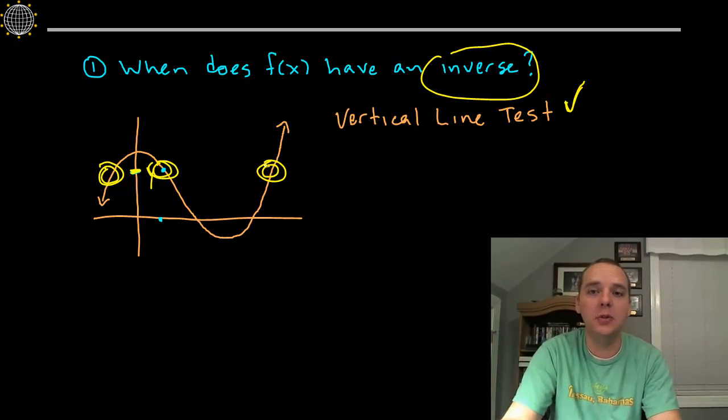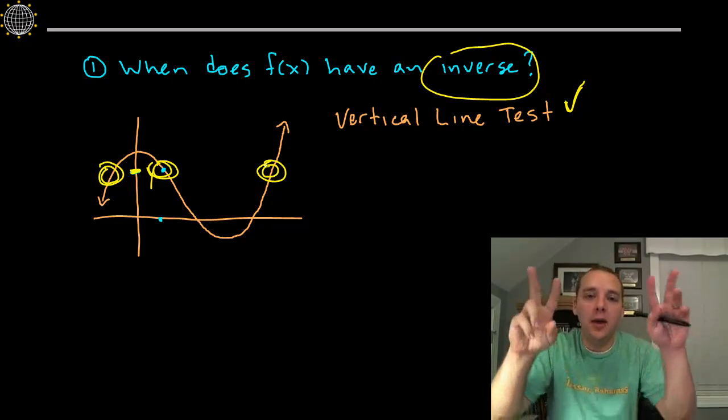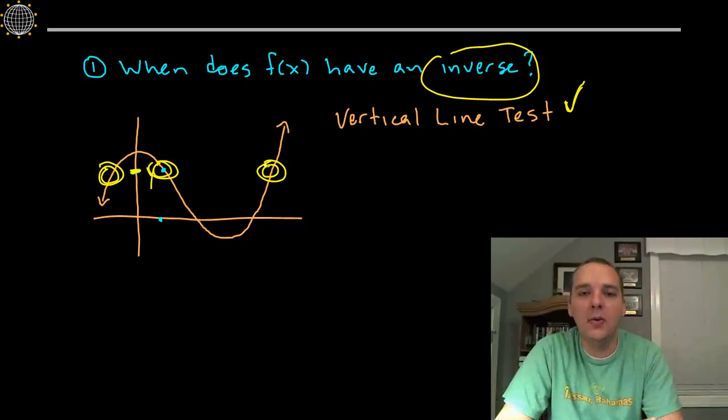So that if you took this guy's inverse relationship, swapping the x's and the y's, your new x would not correspond to one y, but three y's.